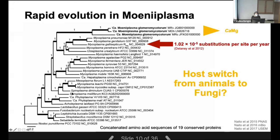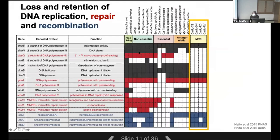By phylogenetic analysis, we concluded that Moiniplasma is a product of a switch from animals to fungi, though we are not satisfied with this phylogeny and there is a lot of work to be done. Stay tuned, because once more data accumulates we might change our mind.